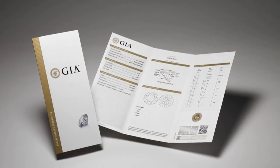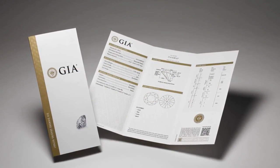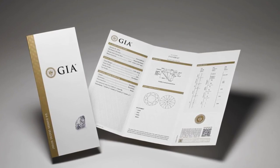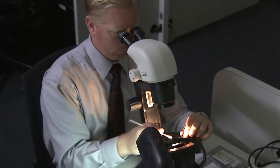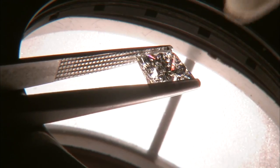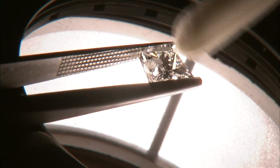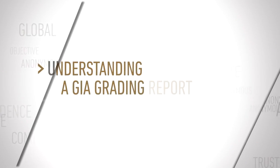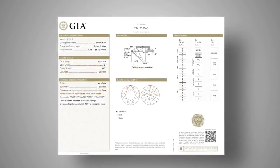A grading report from GIA is more than a collection of observations about a gem. It represents an accurate, unbiased, comprehensive scientific investigation. Now, let's review the main components of a GIA grading report.